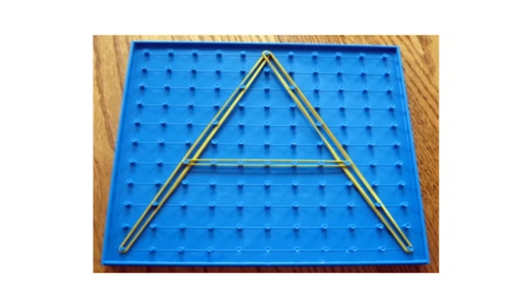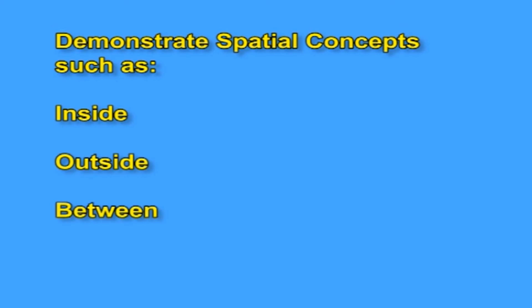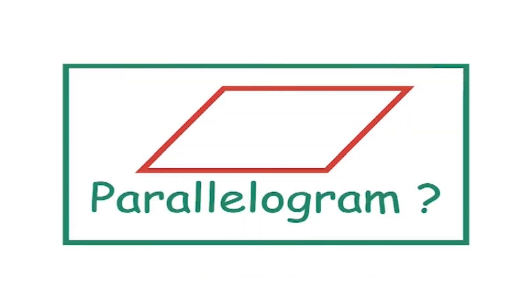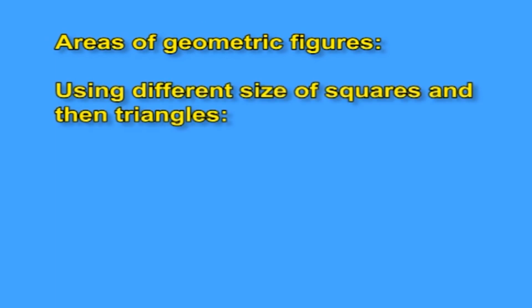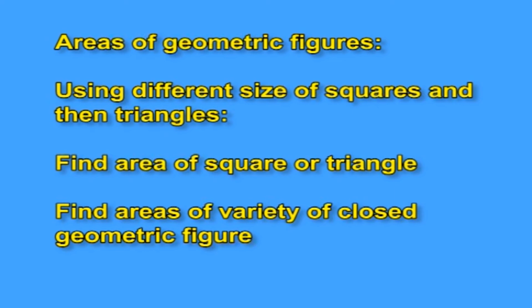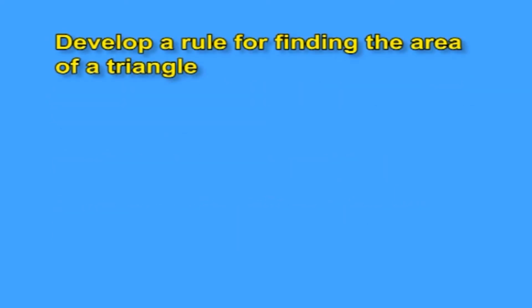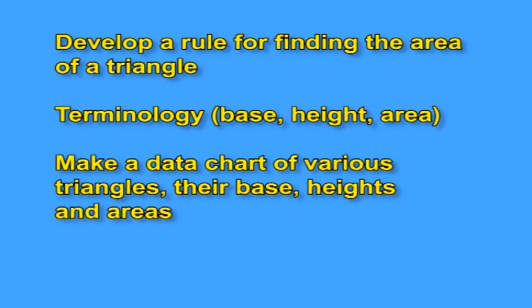Demonstrate spatial concepts such as inside, outside, between, under, over, parallel, right angle, diagonal, horizontal, and vertical. Geometric figures include triangle, square, rectangle, parallelogram, pentagon, hexagon, octagon, and polygon. Angles include right, acute, and obtuse. For areas of geometric figures, use different sizes of squares and triangles to find areas of squares, triangles, and various closed geometric figures, and develop a rule for finding the area of a triangle. Terminology includes base, height, and area. Make a data chart of various triangles, their bases, heights, and areas.